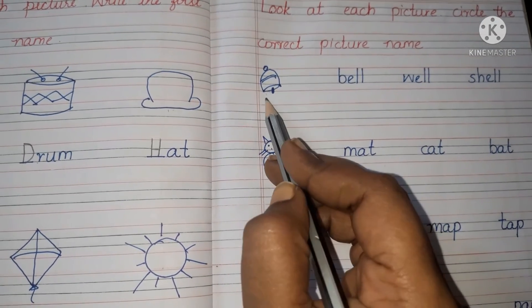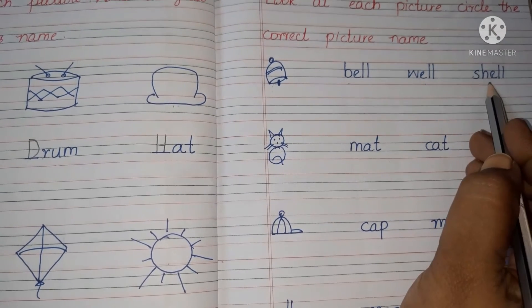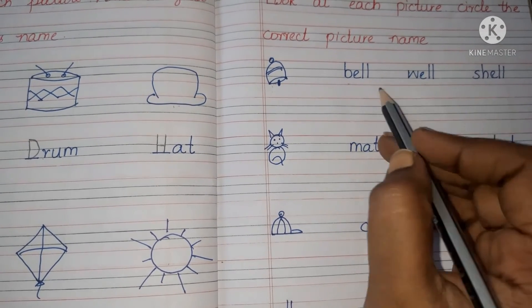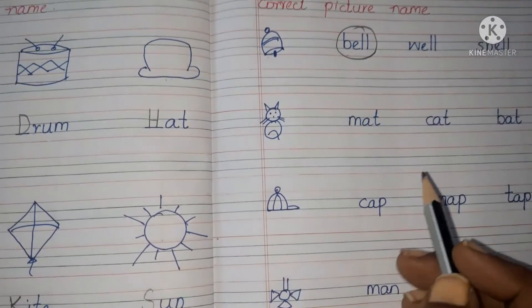What is this one? Bell. So read the spelling here. B-E-L-L bell, W-E-L-L well, S-H-E-L-L shell. So what is the correct one? So this is the correct one. Circle like this.